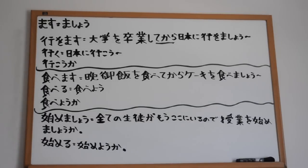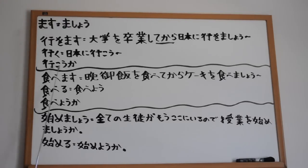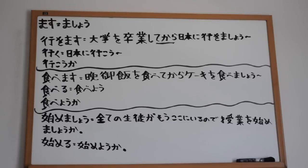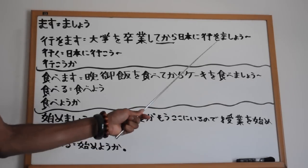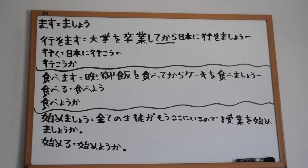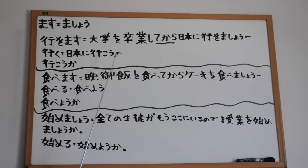It's different for all verbs of course. This here - ikou ka, ikou ka - that means shall we go. Like ikimashou ka, you put the ka for that - shall we go, shall we do this, shall we do that. So ikou ka means shall we go. So: iku becomes ikou - let's go to Japan. Ikou ka - shall we go.